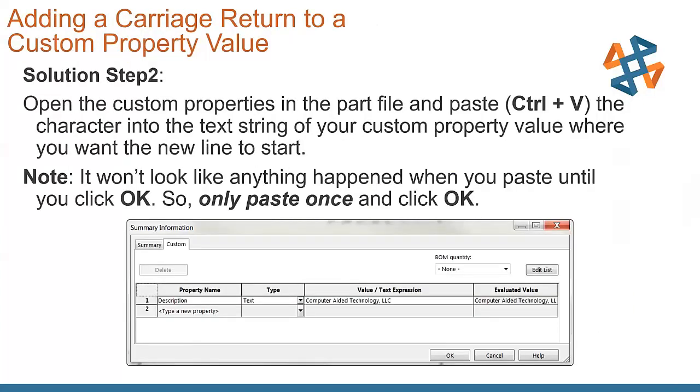Next step that we do, we go back into our part file and we open up the custom properties. And we pick where in that value or text expression we want to have that carriage return, and we paste that item in there, control V. And then the one thing to note with this, it won't look like anything has happened when you paste this information in until you click OK. So only paste this once, otherwise you're going to end up with multiple carriage returns in there.